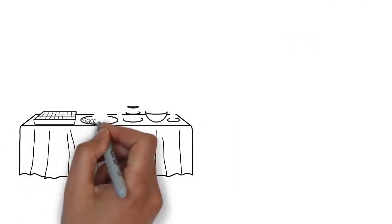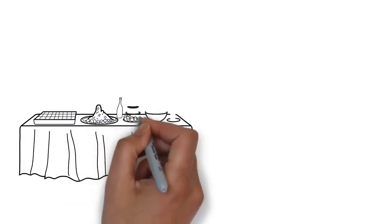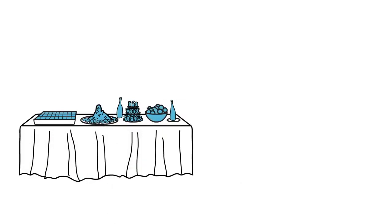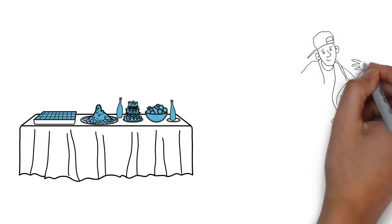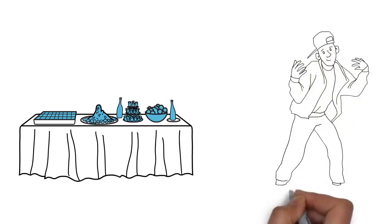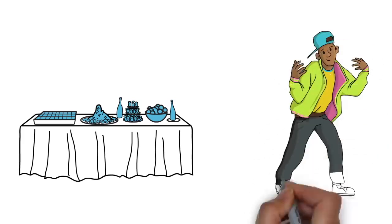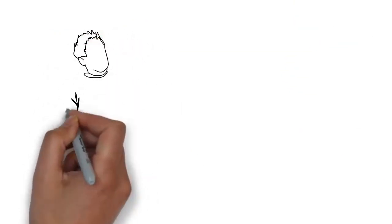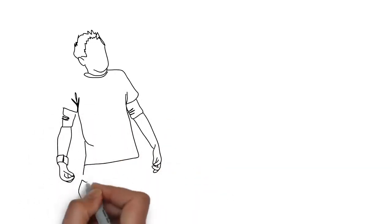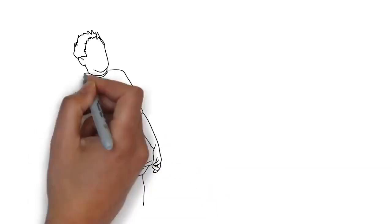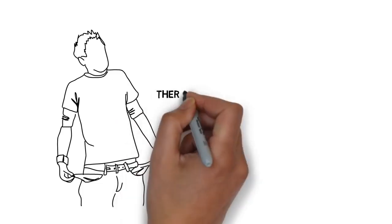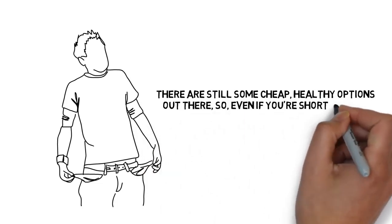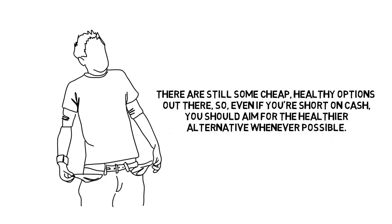Affluent people, on the other hand, tend to have much better diets, eating significantly more whole grains, fruits, and vegetables. This healthier diet acts as an important foundation for success by supplying the energy you need to think clearly and perform. Unfortunately, for many low-income families, it's not that easy to suddenly switch to expensive organic options when fast food is cheaper and more readily available. There are still some cheap, healthy options out there, so even if you're short on cash, you should aim for the healthier alternative whenever possible.